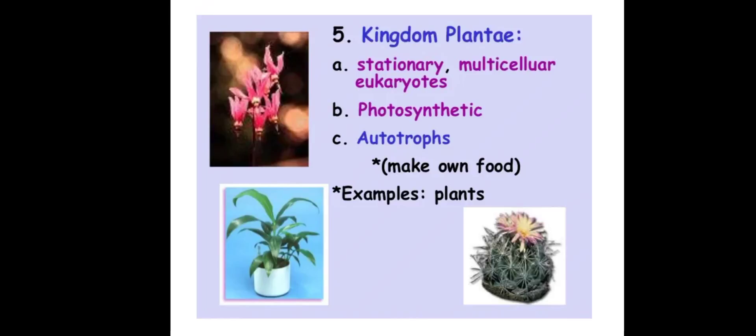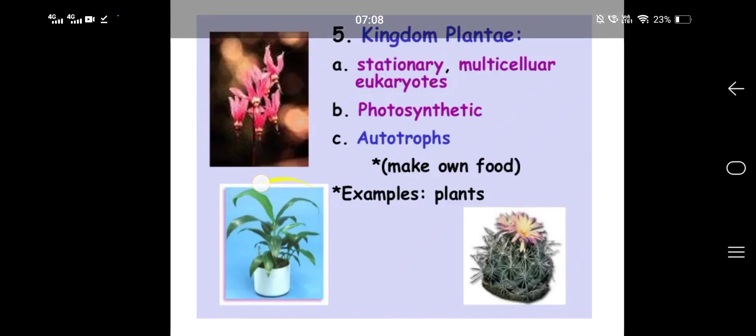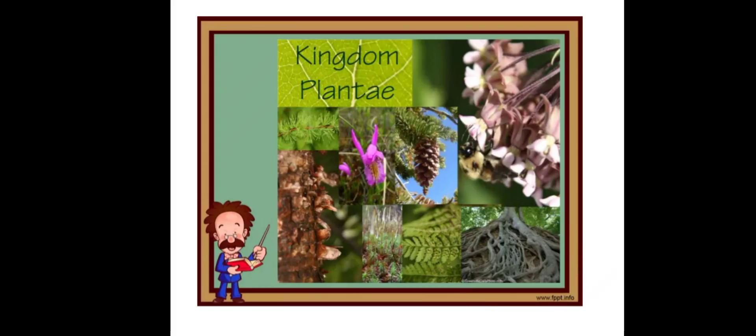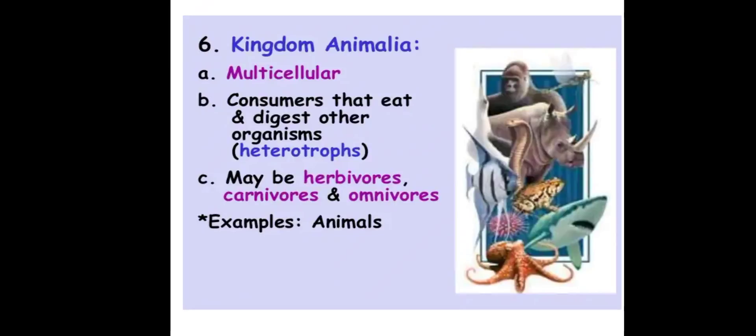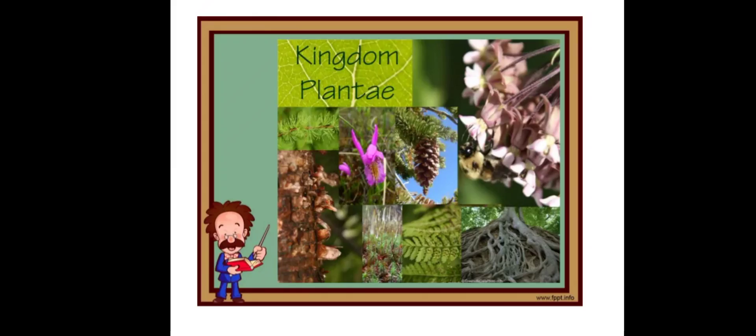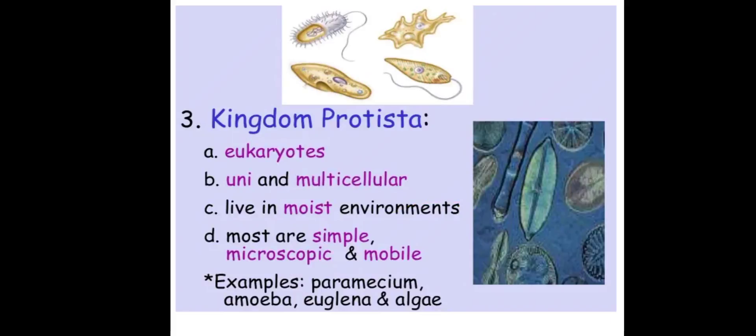These are examples of plants. Next we have Kingdom Animalia. Animals are multicellular consumers that eat and digest other organisms. They are heterotrophs and can be herbivores, carnivores, or omnivores.